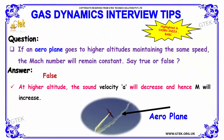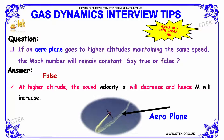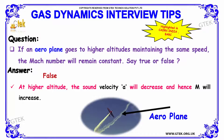Next question: if an aeroplane goes to higher altitudes maintaining the same speed, will the Mach number remain constant — true or false? The answer is false. The reason is that at higher altitude, the sound velocity A will decrease, and hence M, which is the Mach number, will increase.